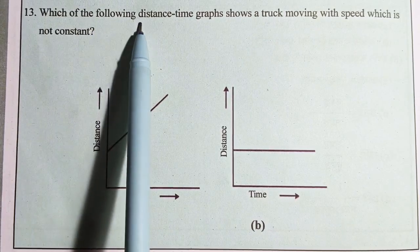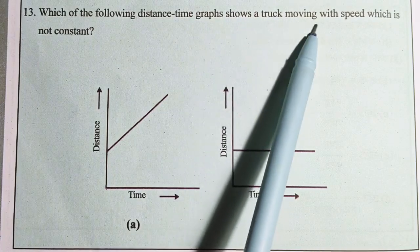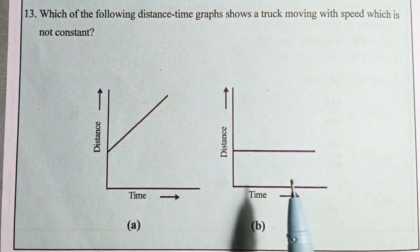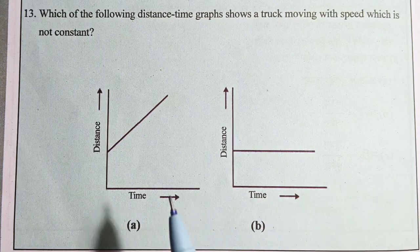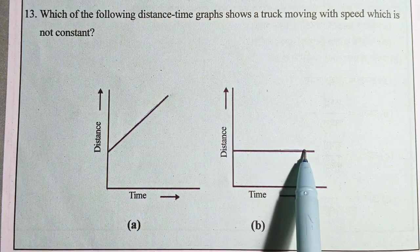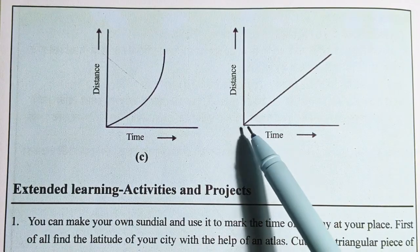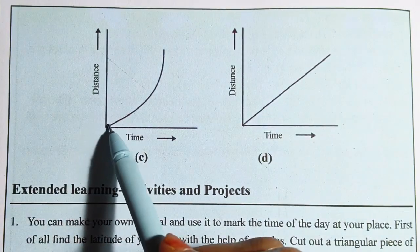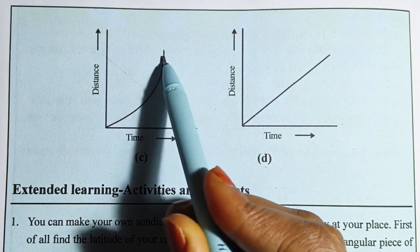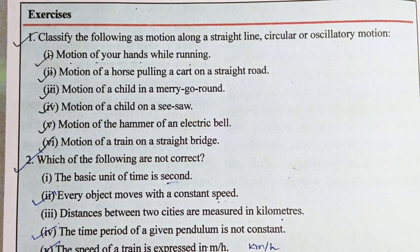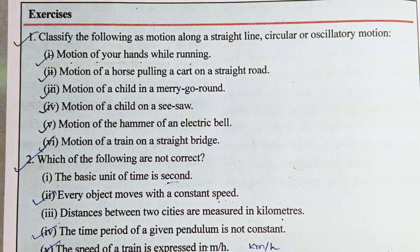Question number 13: which of the following distance-time graphs shows a truck moving with a speed that is not constant? A non-constant speed is shown by a curved line on the distance-time graph. The answer is C. Thank you very much.